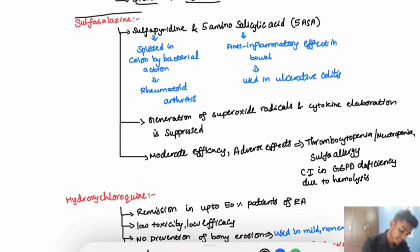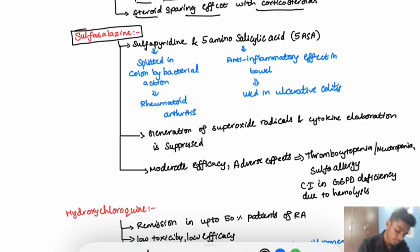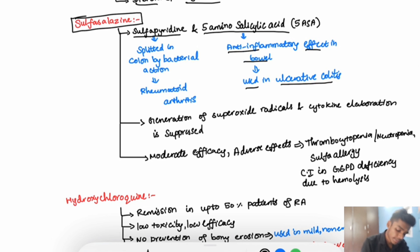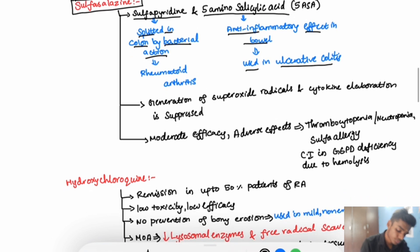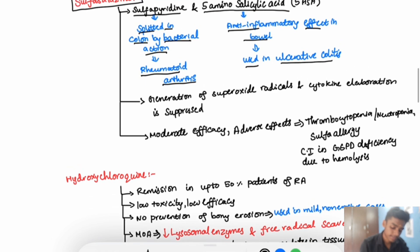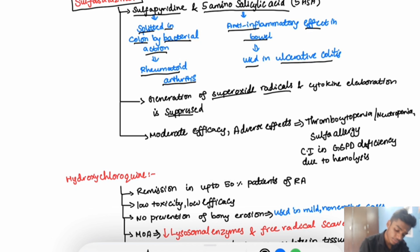Sulfasalazine is a compound of sulfapyridine and 5-aminosalicylic acid. The 5-aminosalicylic acid has an anti-inflammatory effect in the bowel, so it is used in ulcerative colitis. Sulfapyridine is split in the colon by bacterial action and absorbed from there, making it useful in rheumatoid arthritis. Its beneficial effect is due to suppression of superoxide radicals and cytokine elaboration.